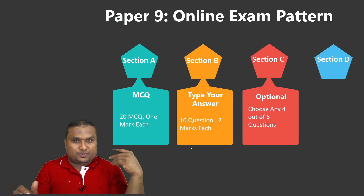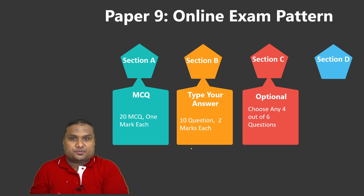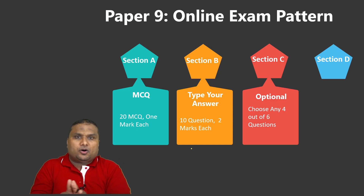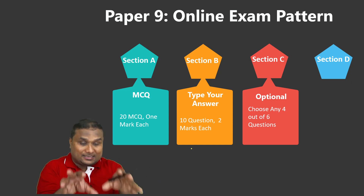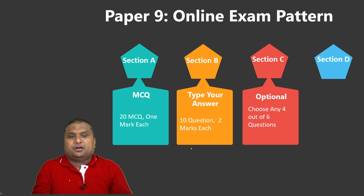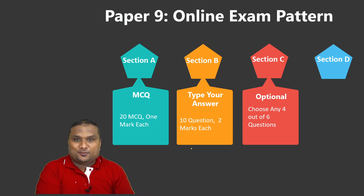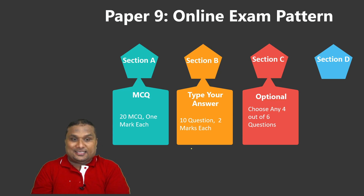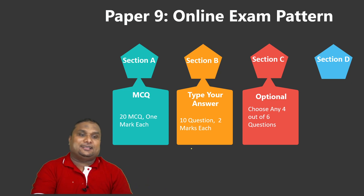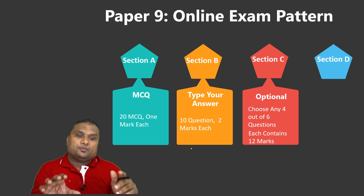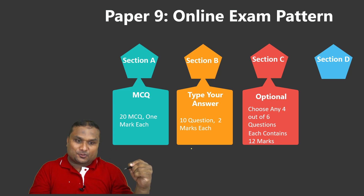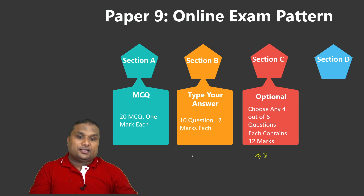Any kind of question pattern may be tested. Each question in Section C carries 12 marks, so from six questions you choose four — that is 4 × 12 = 48 marks. So Section A and B give 40 marks and Section C gives 48 marks, totalling 88 marks so far.